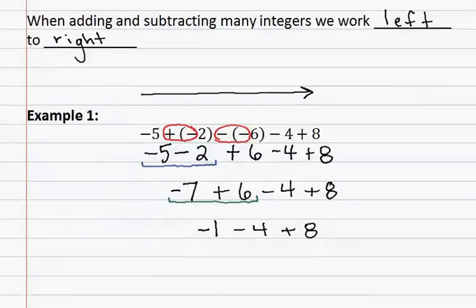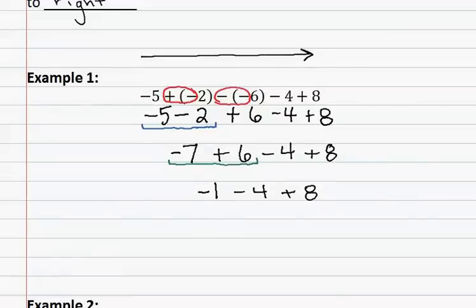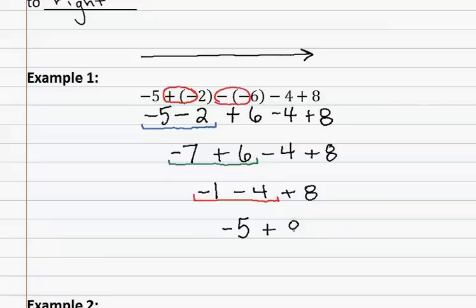We now see that we have negative one minus four plus eight. We look at the next two numbers from left to right and assess whether they have the same sign or different signs. These two numbers have the same sign — both are negative — therefore we use the rule same sign add and keep. We add one plus four to get five, and keep the sign means we keep it negative. Since we did nothing to the positive eight, we bring it down.